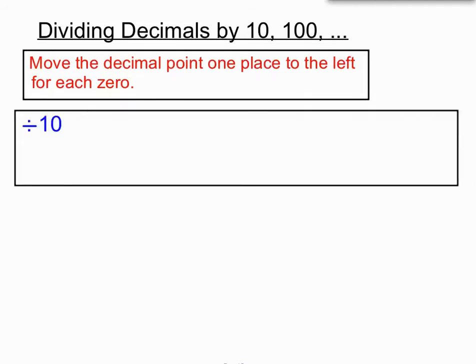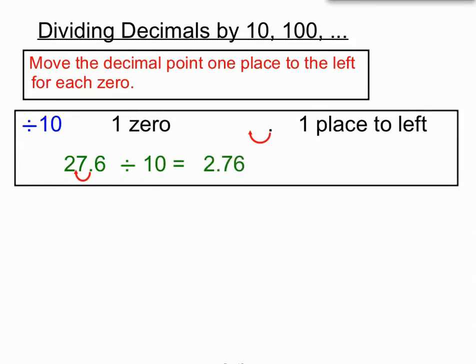So if we're dividing by 10, 10 has a 1,0 so we're going to be moving one place to the left with our decimal point. Here's our example this time, 27.6 divided by 10. If we move one place to the left with our decimal point you can see we're going to have our decimal point between the 2 and the 7 now. 2.76 is our answer. We've moved it one place to the left because 10 had one zero in it.